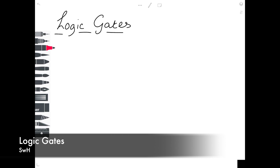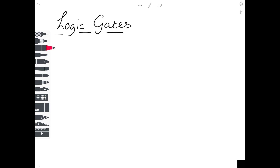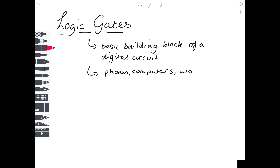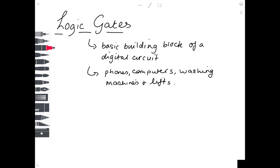In today's video we're going to be looking at logic gates, which is safe to say is one of the nastiest physics topics you'll have to face. But hopefully, once you've gone through this video you'll be able to do every single question perfectly. A logic gate is a basic building block of a digital circuit, and these are found in electronic devices such as phones, computers, washing machines and lifts — so they're all around us in everyday life.